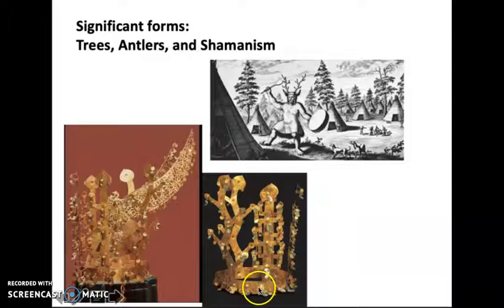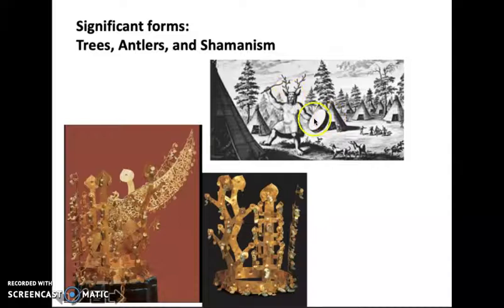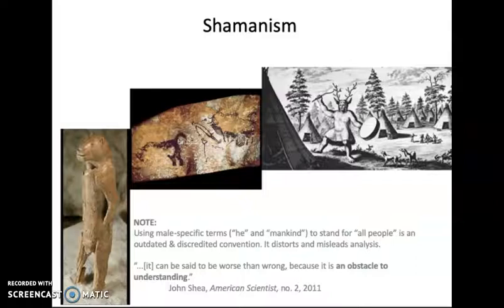The crowns feature tree forms and antler forms, which are recurring in shamanism across the world. Shamanism is the world's oldest religion, and its visual elements and thought processes seem to be relatively consistent whether you're talking about Korea, Siberia, Russia, or Ireland. You see shamans beating drums with antlers, which are understood to be a tree of life — an axis mundi. Let's watch a video to see what I mean.